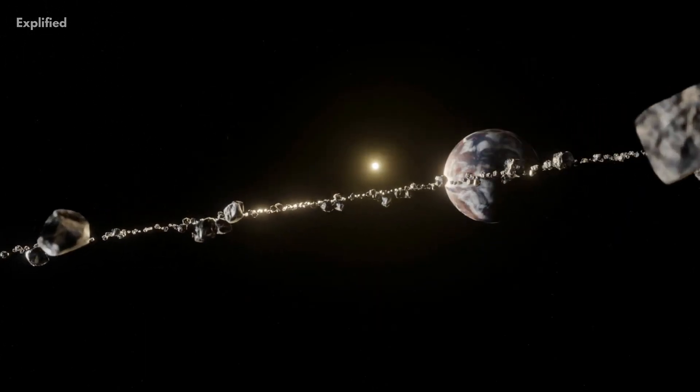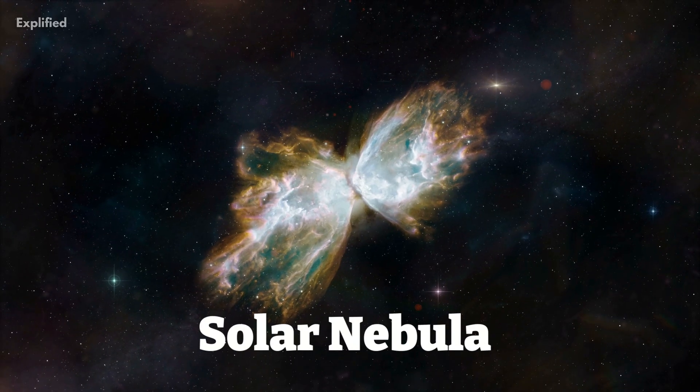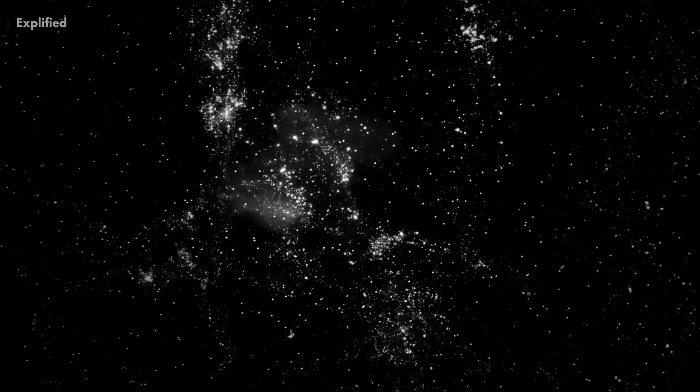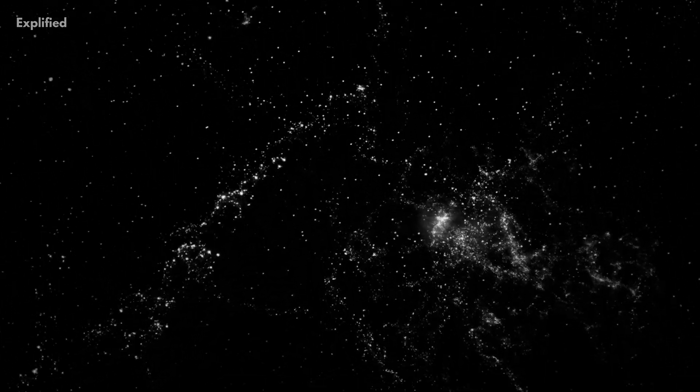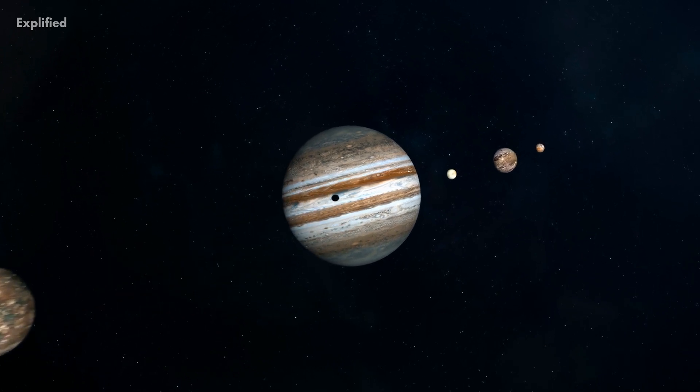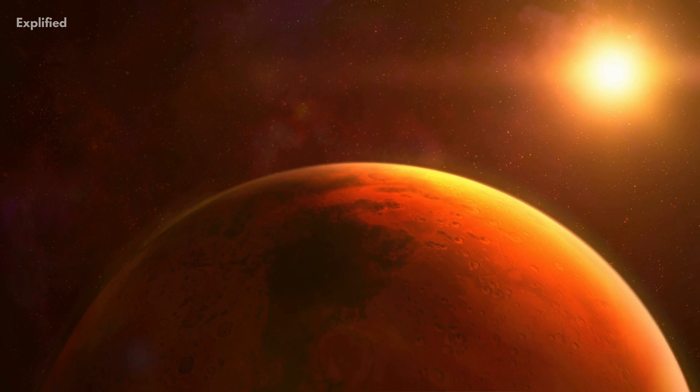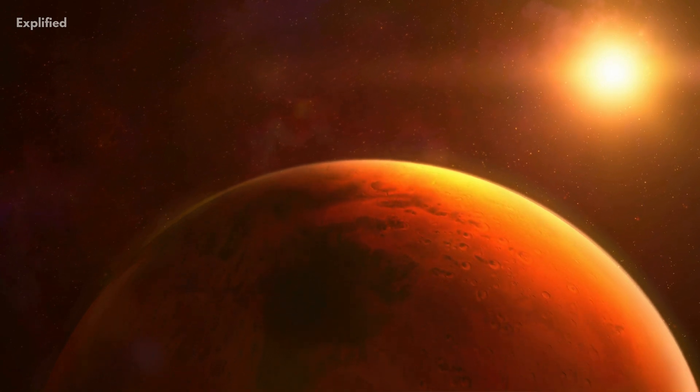The asteroid belt originated as a collection of planetesimals from the first solar nebula. The tiny progenitors to protoplanets are called planetesimals. However, gravitational alterations from Jupiter gave the protoplanets between Mars and Jupiter too much orbital energy for them to accrete into planets.